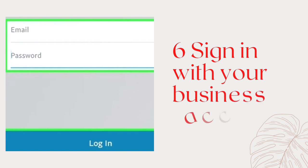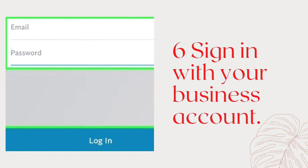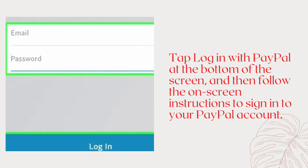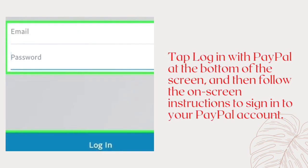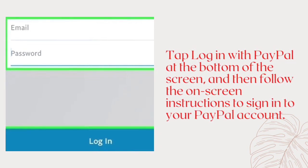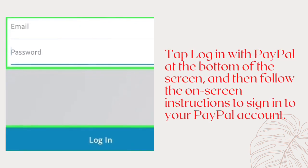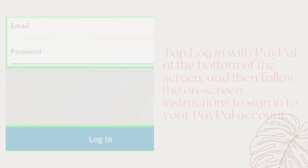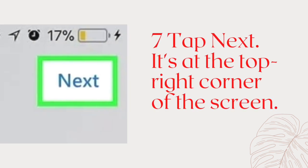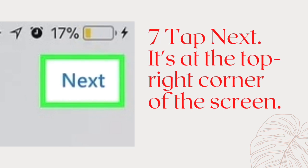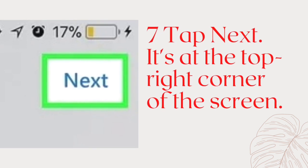Step 6: Sign in with your business account. Tap 'Log in with PayPal' at the bottom of the screen and then follow the on-screen instructions to sign in to your PayPal account. Step 7: Tap Next — it's at the top right corner of the screen.